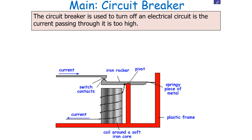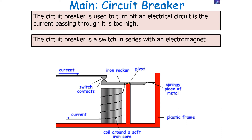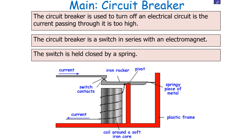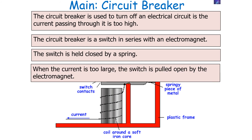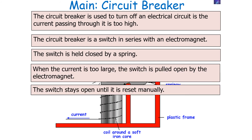A circuit breaker is used to turn off an electrical circuit when the current passing through it is too high. The circuit breaker is a switch in series with an electromagnet, and the switch is held closed by a spring. When the current is too large, the switch is pulled open by the electromagnet and stays open until it is manually reset by the user.